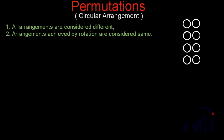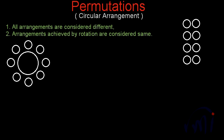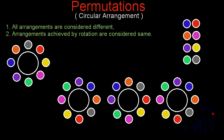Suppose we have eight balls to be arranged in a circle. To have clarity, let me color all these balls in different colors: dark blue, red, orange, lavender, purple, yellow, green, and gray. So these are the eight balls, and if I want to arrange them on this circle, there should be a total of n factorial ways possible — but here we have one condition: arrangements achieved by rotation are considered the same.